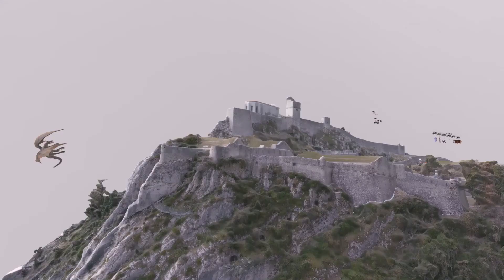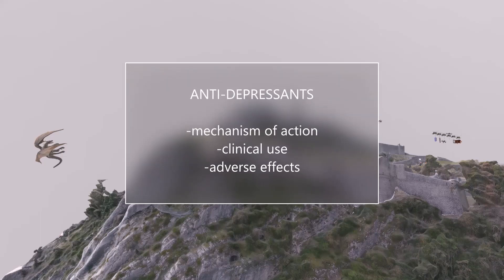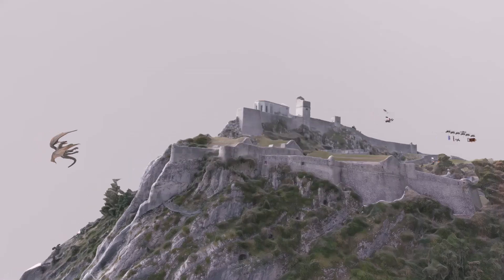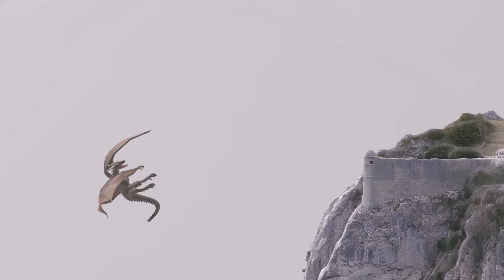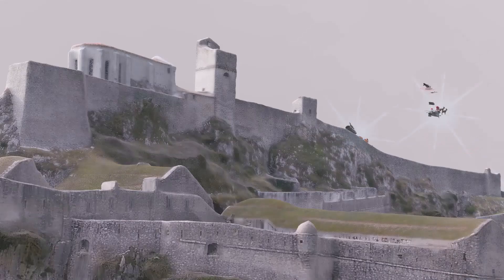Welcome to our scene on the antidepressants. In this awesome scene, we're going to talk about all the different types of antidepressants that we need to know about. We're going to talk about their mechanism of action, their clinical use, and their adverse effects. In this scene, we had this dragon over here — the Depression Dragon — which represents depression. All of the characters responsible for the dragon's death represent the antidepressants.